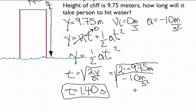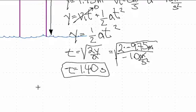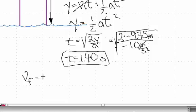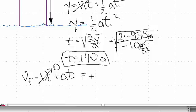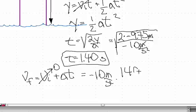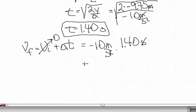The time equals 1.40 seconds. You can see the meters cancel with each other, and when we take the square root of seconds squared we get seconds — so that's our answer. Now for the final velocity, once again it's v_f = v_i + a·t, and vi goes to zero, so it's just the acceleration times the time: (−10 m/s²) × (1.40 s). One of the seconds cancels, and the answer in this case is −14.0 meters per second.